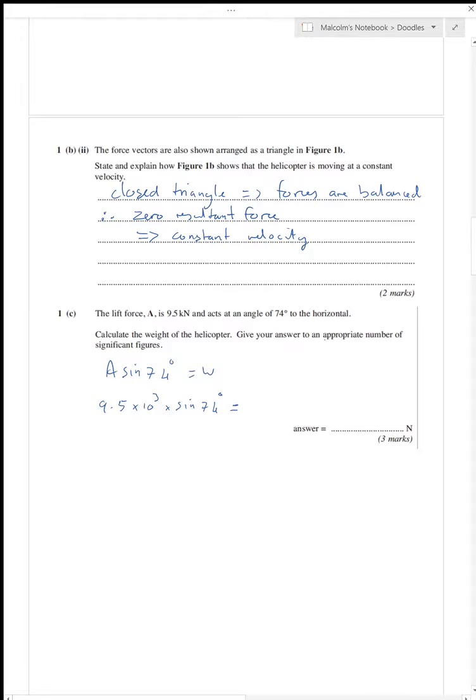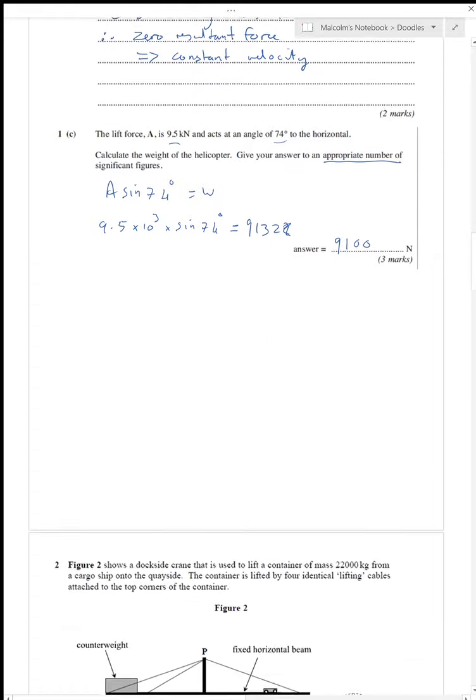But give your answer to an appropriate number of significant figures. In the question I've got two sig figs and I've got two sig figs, so I'll give my answer to two sig figs. So it comes out as 9.1 times 10 to the 3 newtons. Answer to two significant figures, and that is question one done.